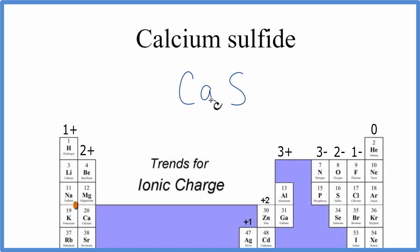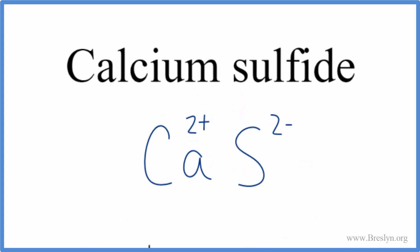So back to the periodic table, calcium has a 2+ ionic charge, sulfur has a 2- ionic charge. These charges need to add up to zero. We need to have a net charge of zero. 2+ and 2- adds up to zero.